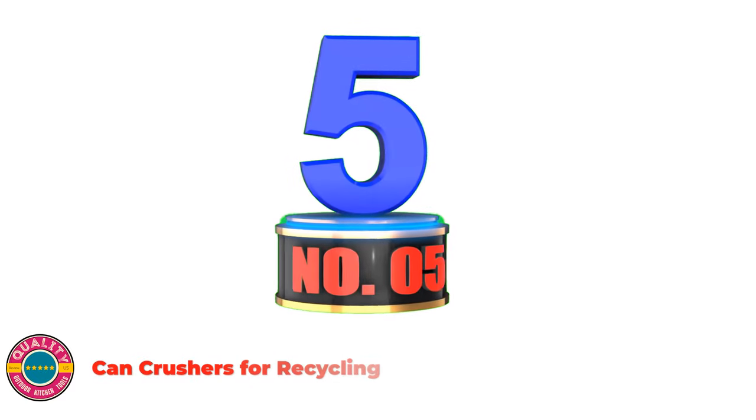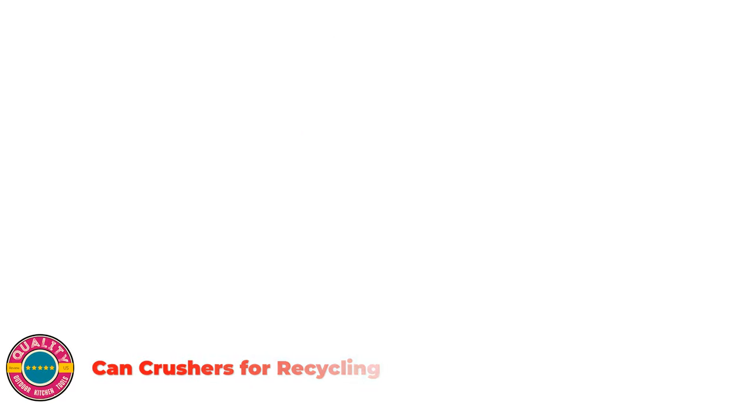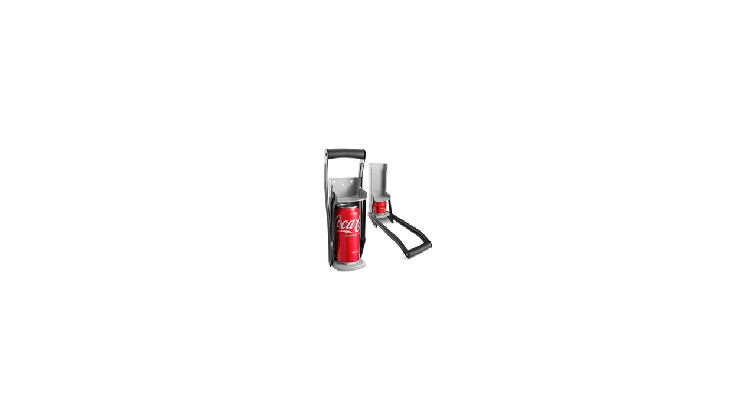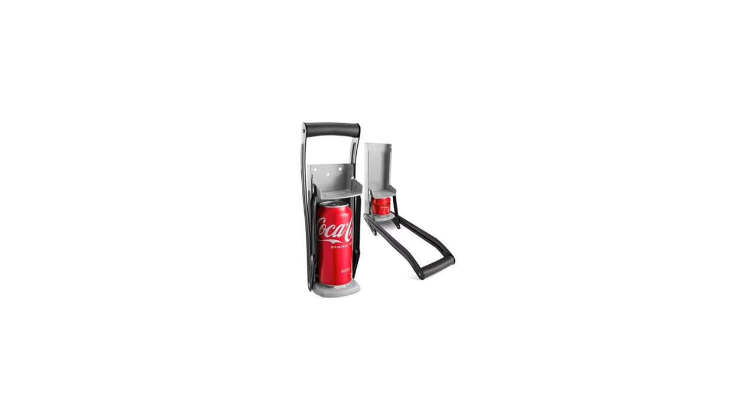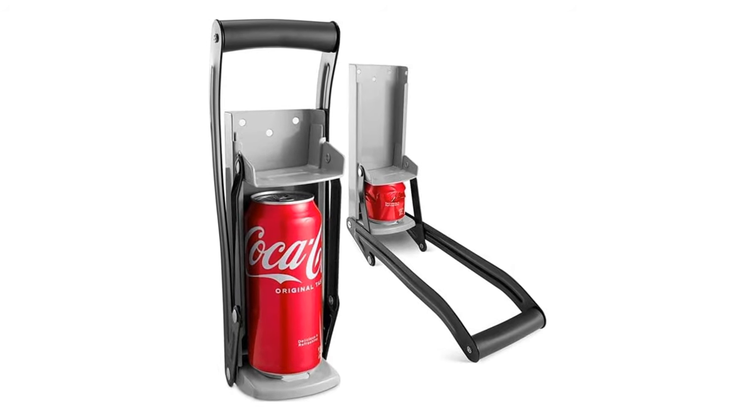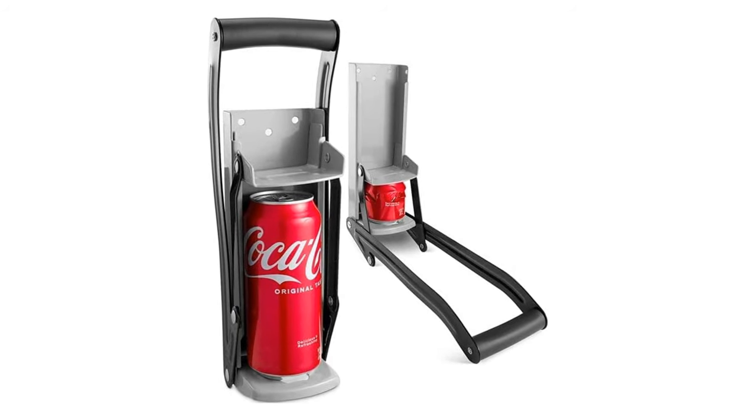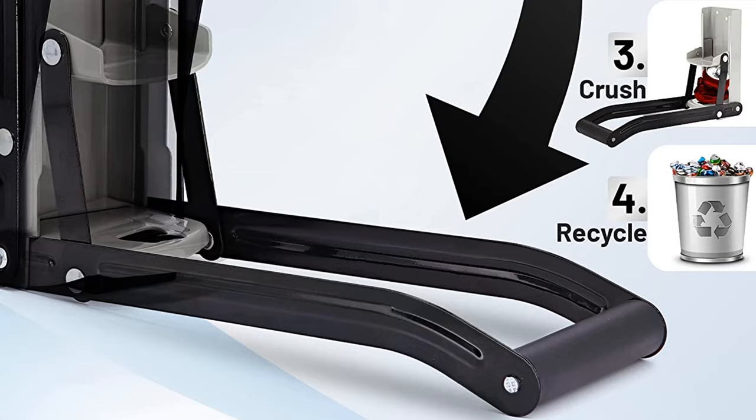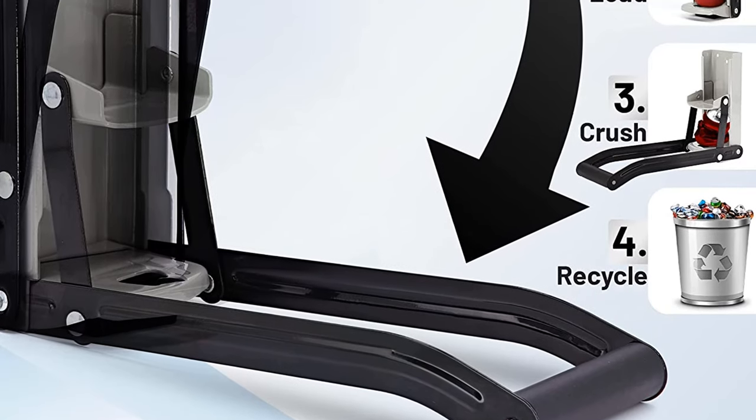Number five: Can Crushers for Recycling. The RAM Pro Eco-friendly 12 ounce manual can crusher and bottle opener is mountable on walls and tables to compact aluminum beverages and soda cans, while also opening beer bottle caps. Fits all 12 ounce (354 milliliters) aluminum cans up to 2 3/4 inches wide and 5 inches tall.